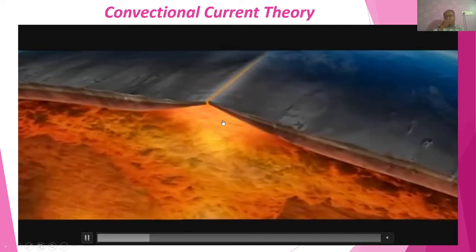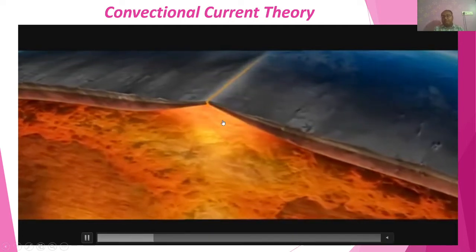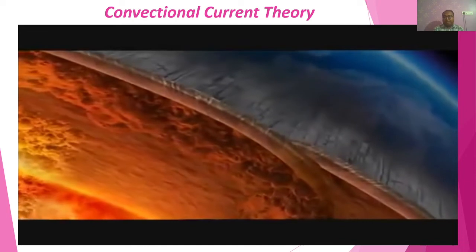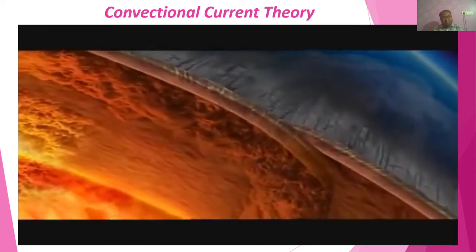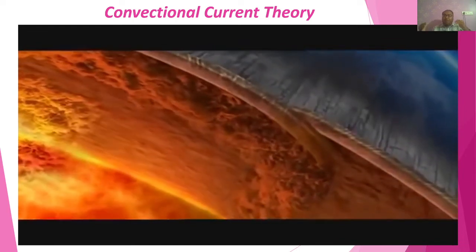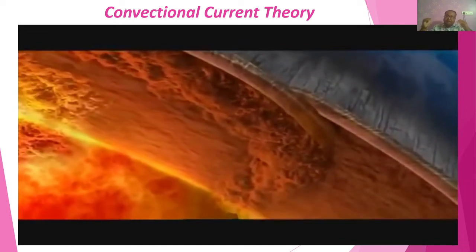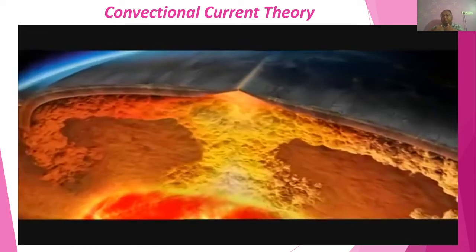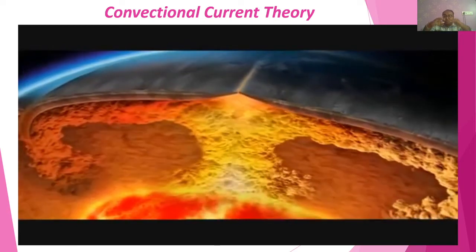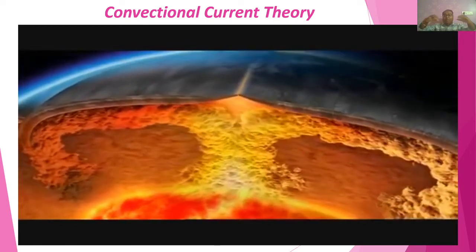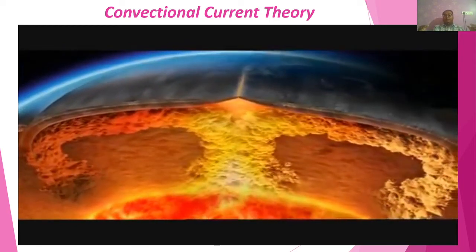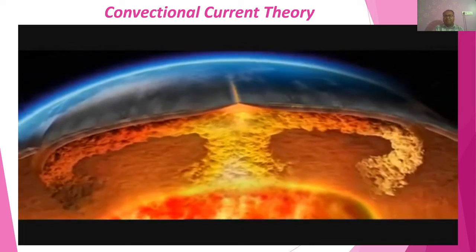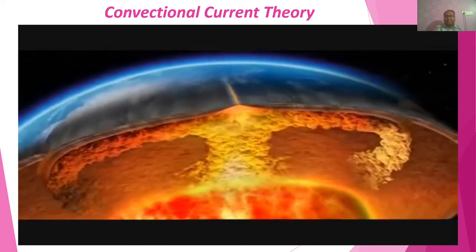This concept is known as convectional current. A current passes through the mantle, and whenever the current passes, continents converge to some extent and then move out. This pattern of movement is very much visible.